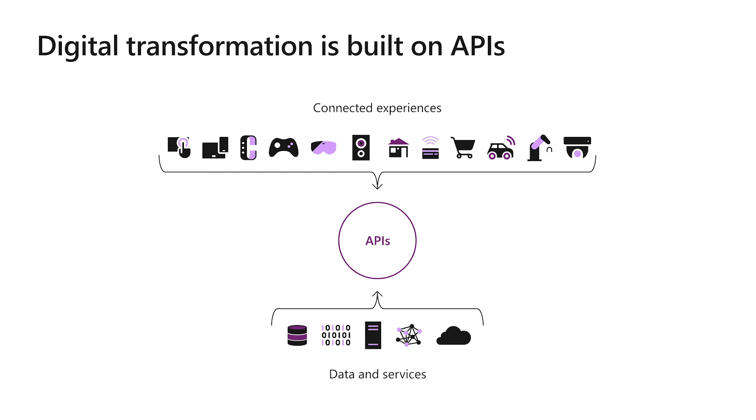But what about internal APIs that wouldn't already exist in that catalog? Power Apps has a concept called connectors, which are just a way to leverage a particular API in my application. To expose APIs to citizen developers, we just need to build a custom connector. Custom connectors do the exact same thing as regular connectors, but connecting to internal APIs.